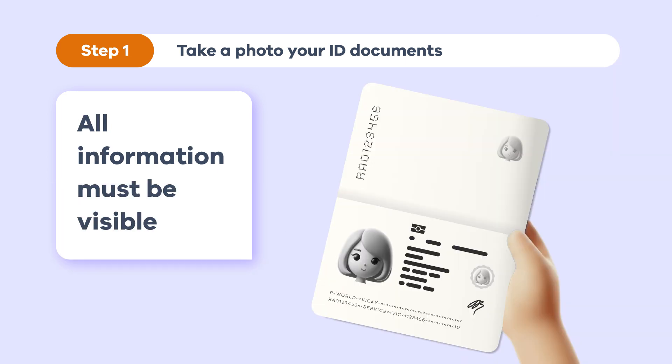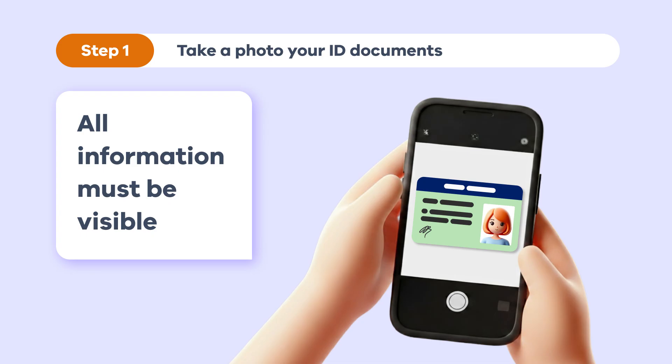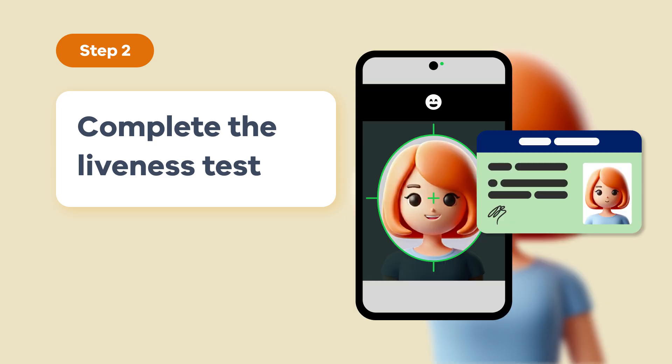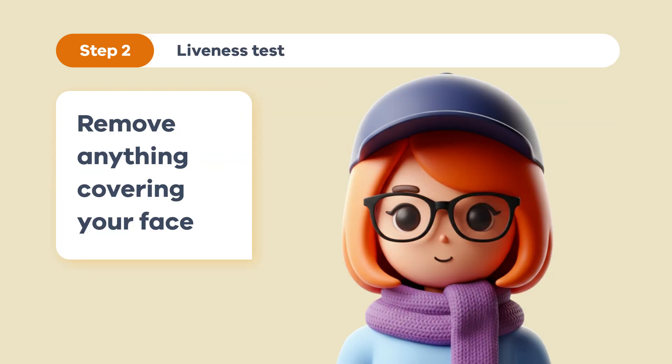When taking photos of your documents, make sure the picture is clear against a plain background and the document text can be read. Step 2: complete the liveness test. This test shows us you're a real person and compares your face to your photo ID. It will use your phone's selfie camera and give you some basic instructions, such as smiling, to complete the test.